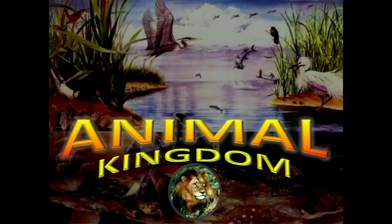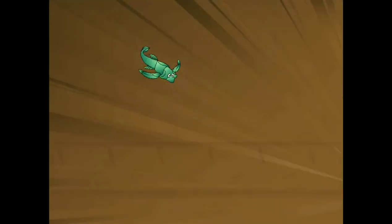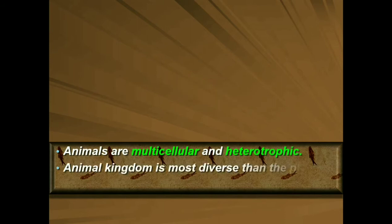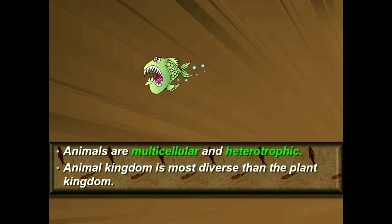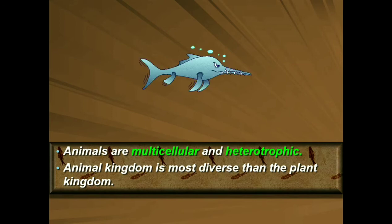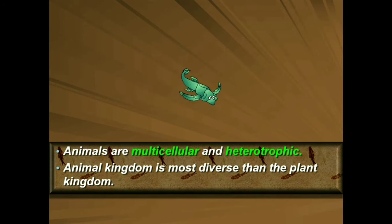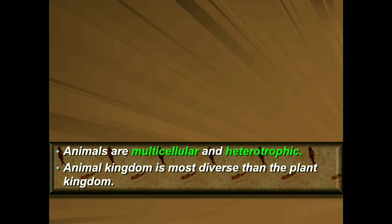Chapter 4 Animal Kingdom. Topics to be covered are 4.1 Basis of Classification and 4.2 Classification of Animals. When you look around, you will observe different animals with different structures and forms. As over a million species of animals have been described till now, the need for classification becomes all the more important. Classification also helps in assigning a systematic position to newly described species.